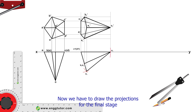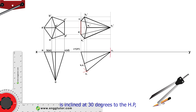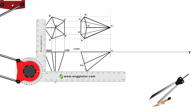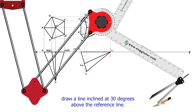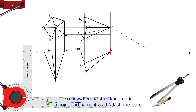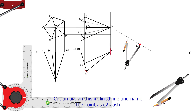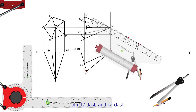Now we have to draw the projections for the final stage. As given in the question, the edge of the base contained by that triangular face resting in the VP is inclined at 30 degrees to the HP. C–D is the edge contained by that triangular face. Draw a line inclined at 30 degrees above the reference line and trace the figure onto this line. Mark a point anywhere on this line and name it D2'. Measure the length C1' to D1' with the compass; from D2' as center, cut an arc on this inclined line and name the point C2'. Join D2' and C2'.